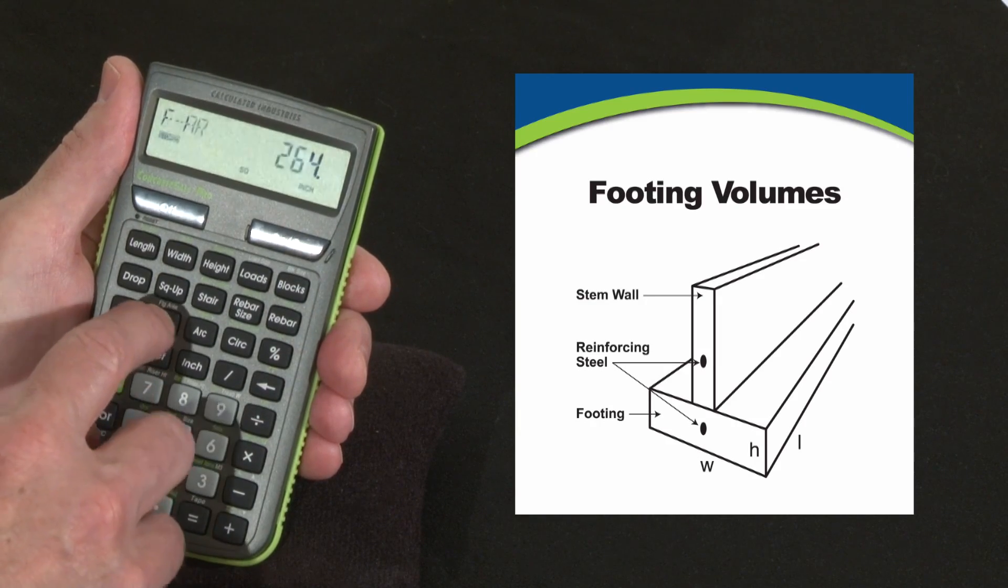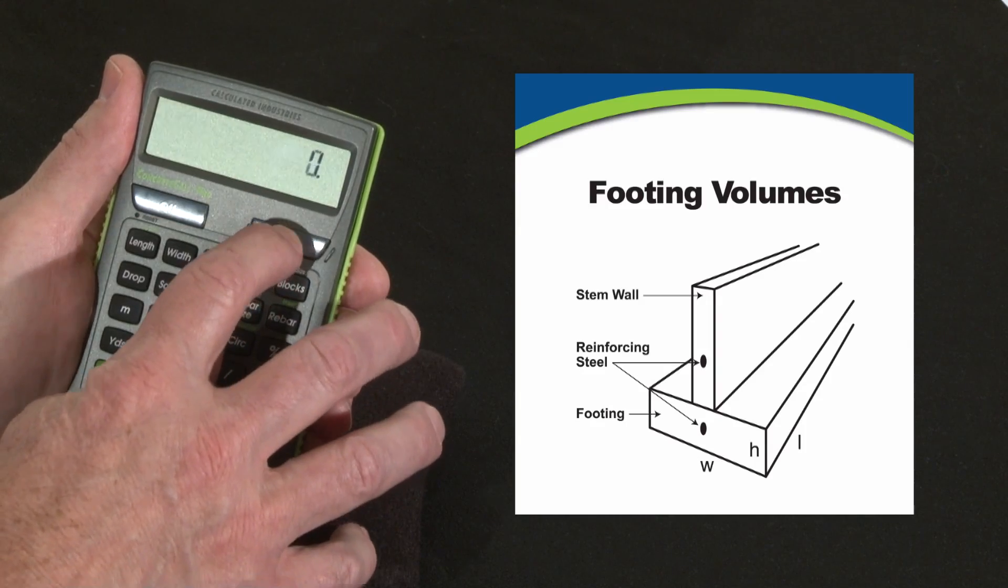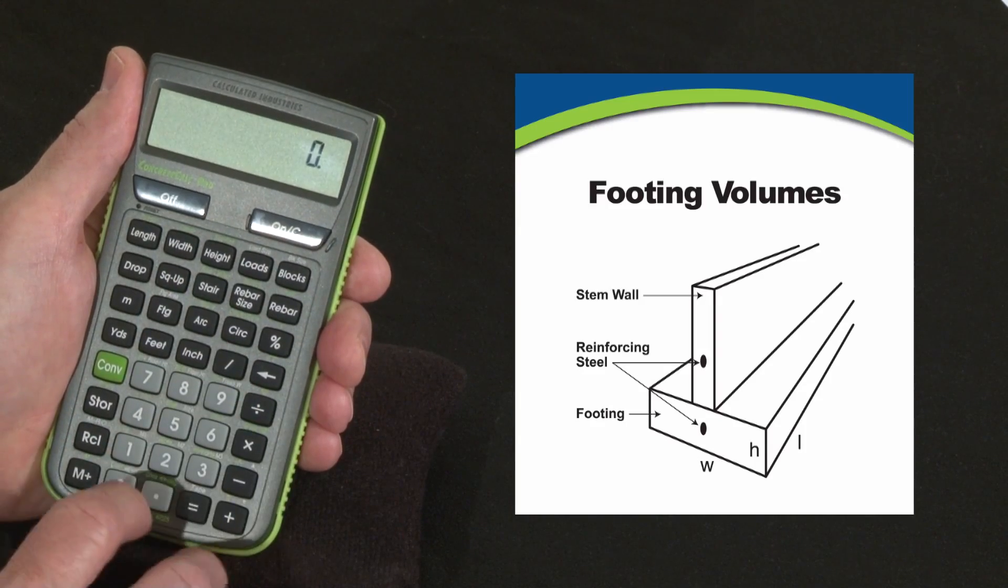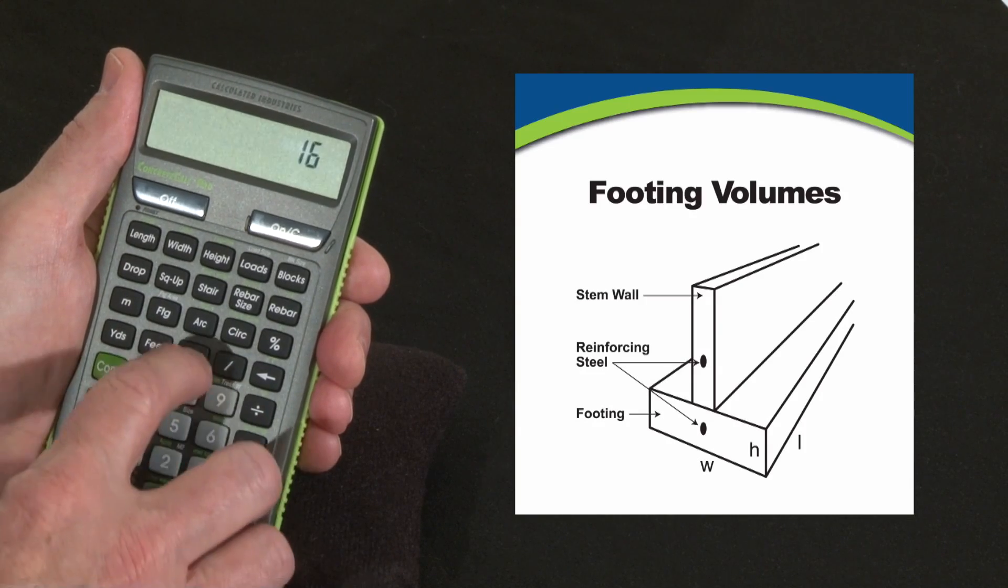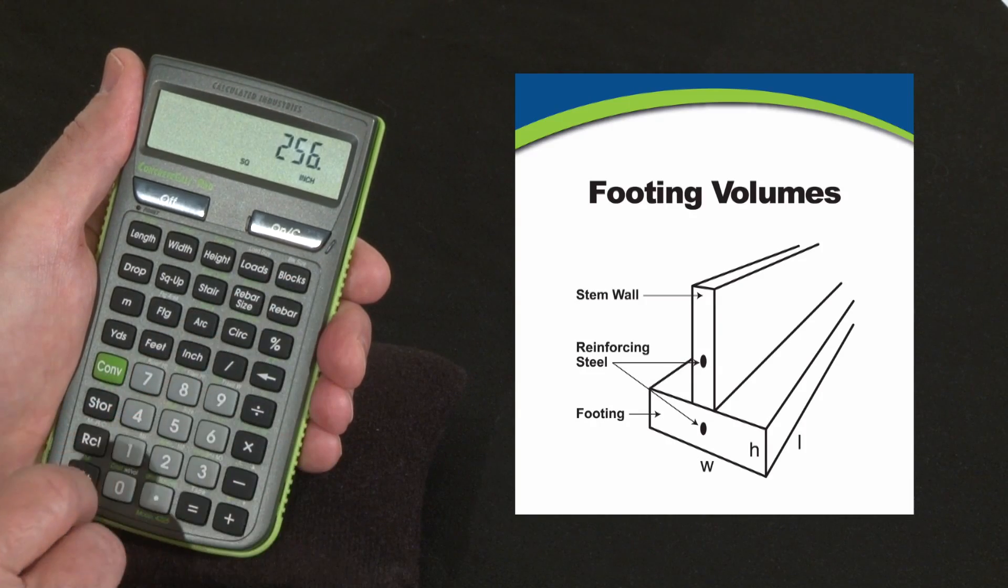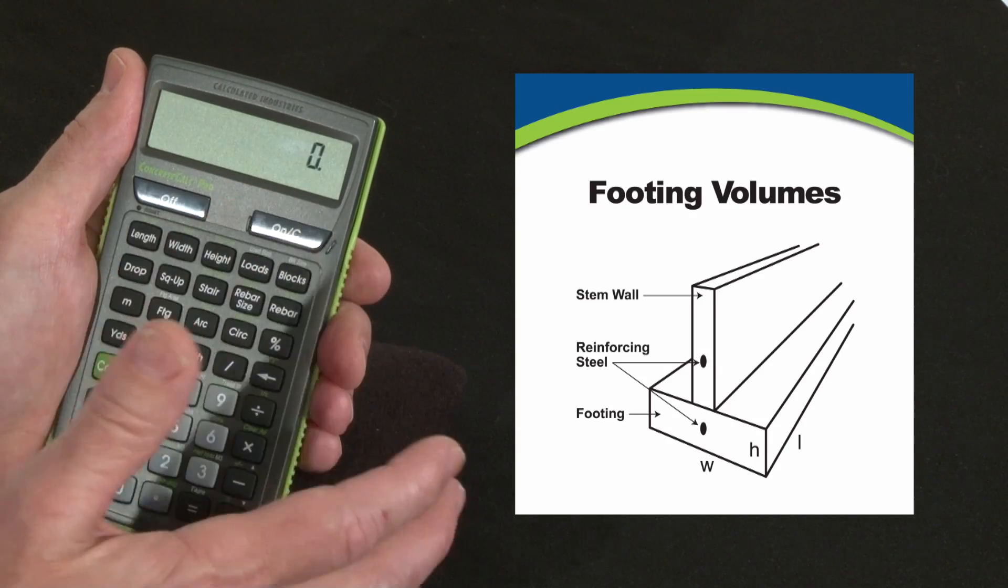Right now we can recall the footing area is 264 square inches. You can store whatever size you want in there. For instance, if we had a favored footing configuration that was 16 inch by 16 inch, that's 256 square inches. I can now store that as my footing area.